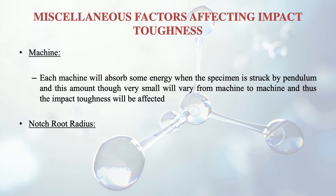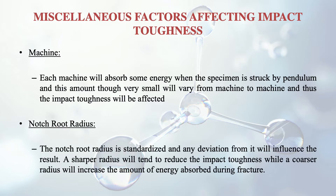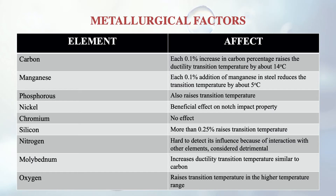Regarding notch root radius: a sharper radius will tend to reduce the energy absorbed during fracture, while a coarser radius will increase the amount of energy absorbed during fracture. These are among the factors — both mechanical and metallurgical — which affect impact toughness.